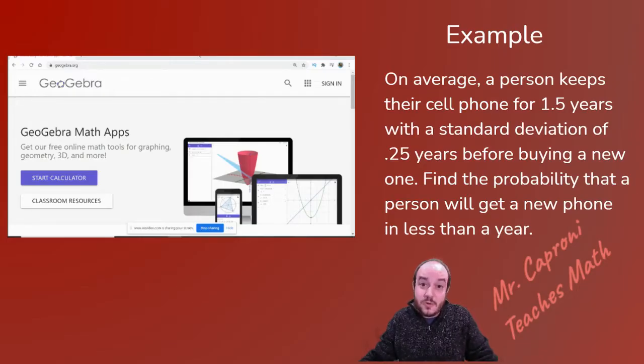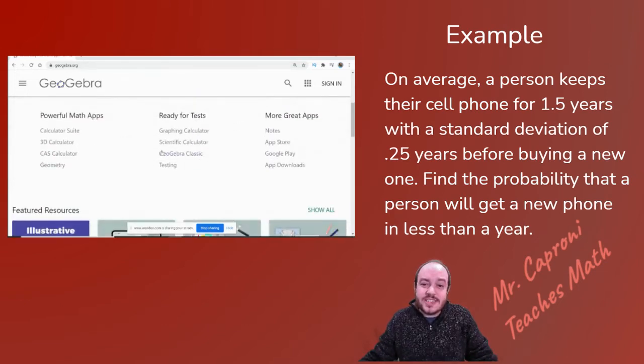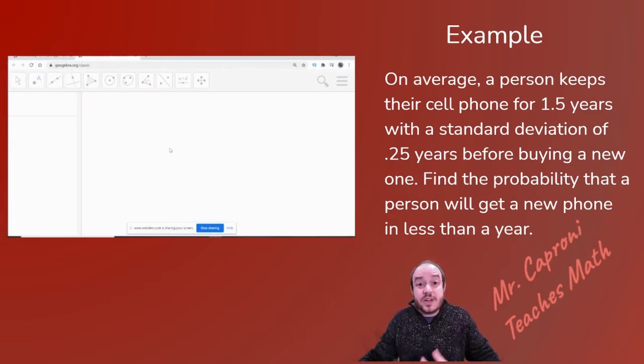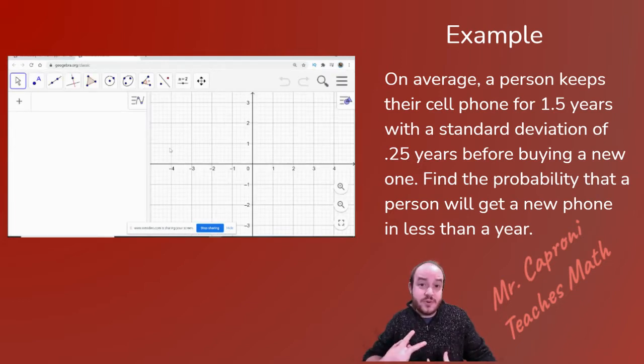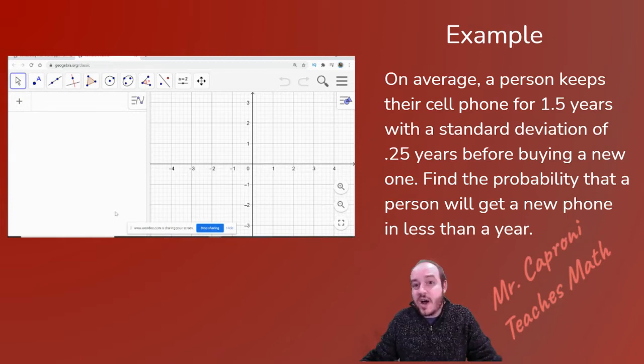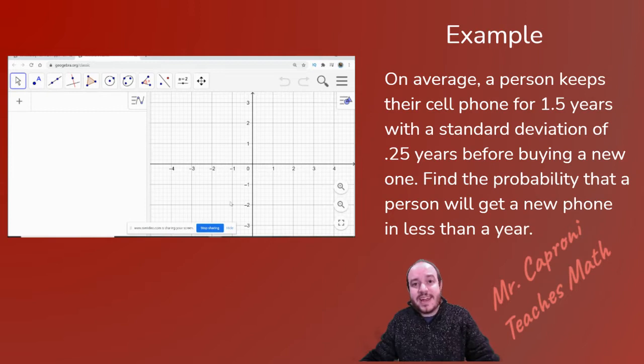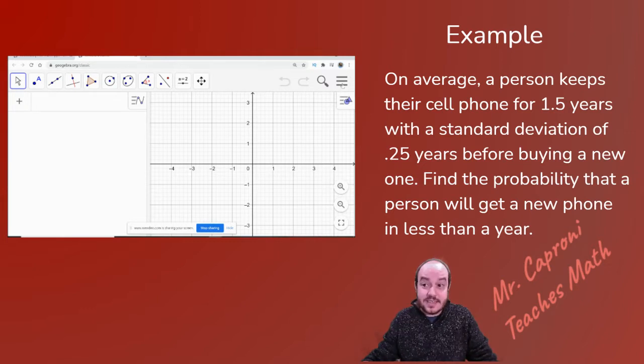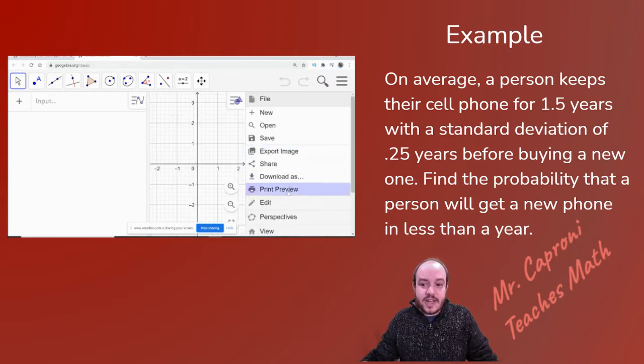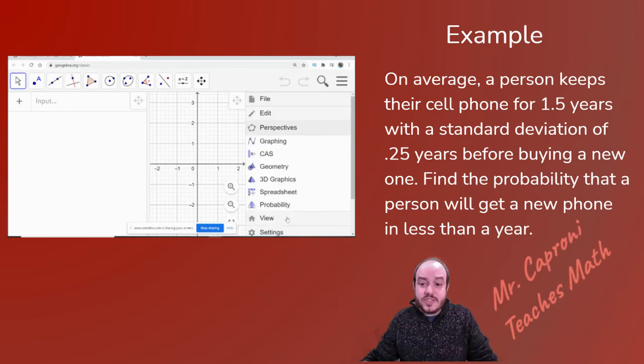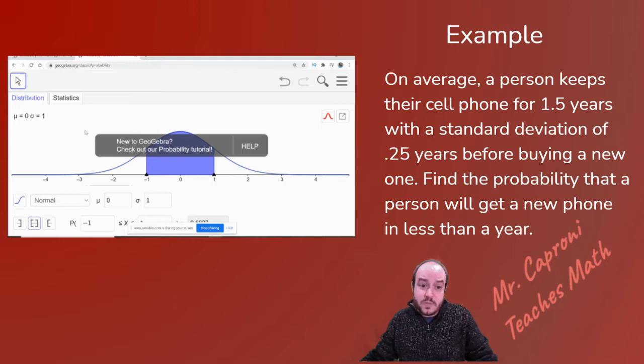We're at geogebra.org. Once you're here, go ahead and scroll down to where it says GeoGebra Classic. And that's what we want. So that's where we're going to click. And it's going to bring us to a new screen. Either a pop-up window will give you options of where to go from there, or it won't pop up. If it does pop up, go ahead and hit probability because that's where we want to be. But if it does not, then go up in the top right-hand corner of the screen where there are three lines. Click on those and go down to perspectives. Once you click on perspectives, go ahead and click probability. And that will bring you to the screen where we want to be.